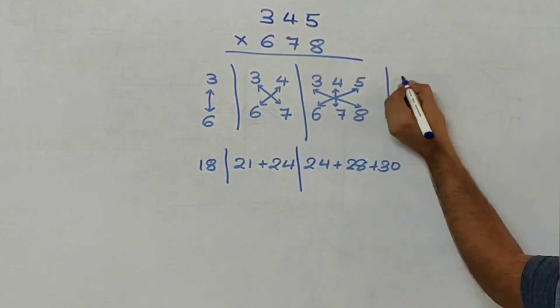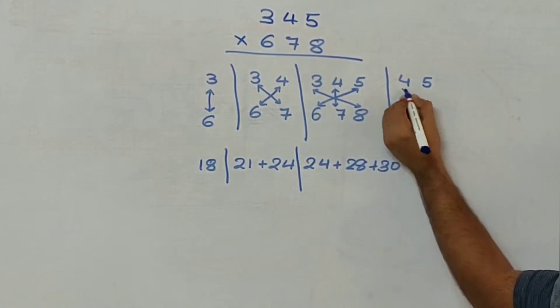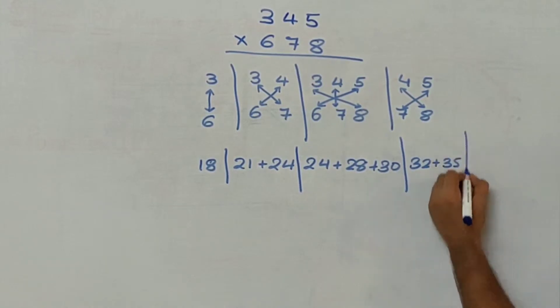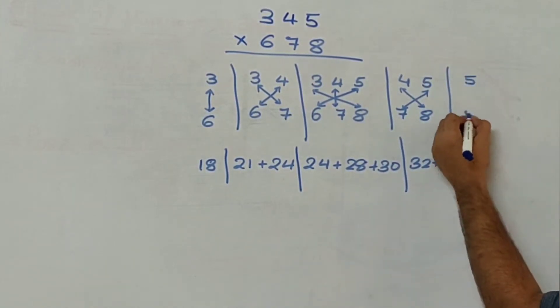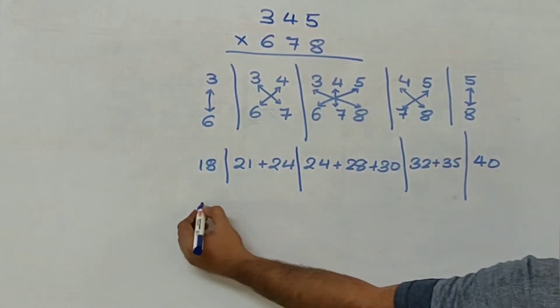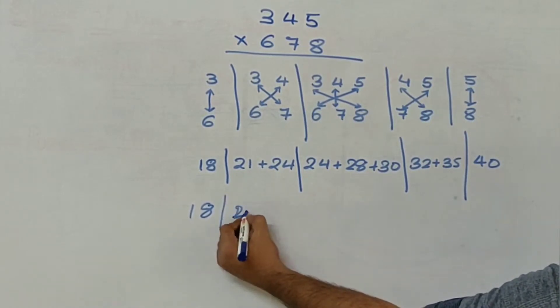Next group 4, 5, 7 and 8. So 4 into 8 and 7 into 5 gives me 32 plus 35. 5 and 8, so 5 eights are 40. So we will add up all of them. This gives me 45.